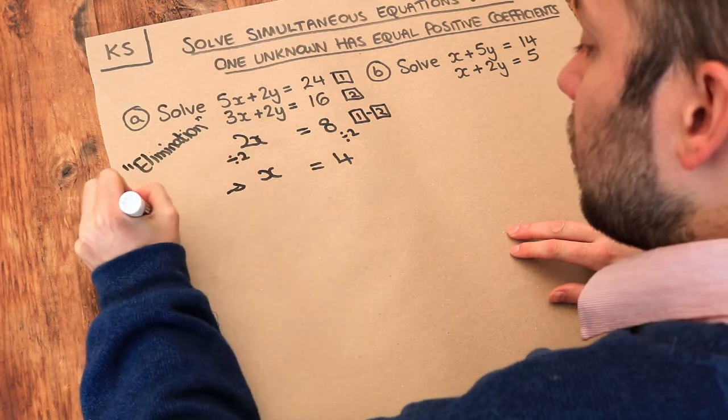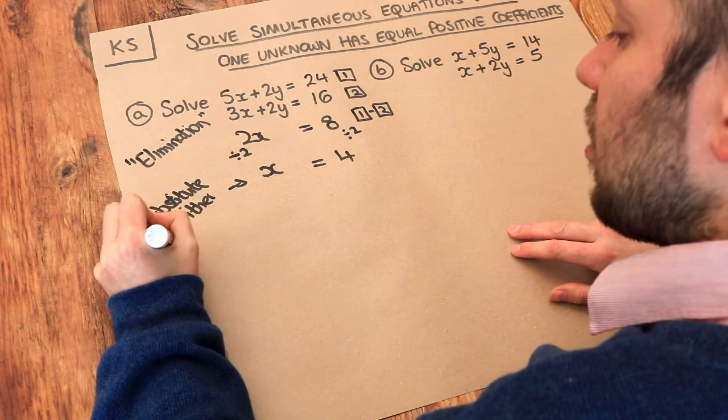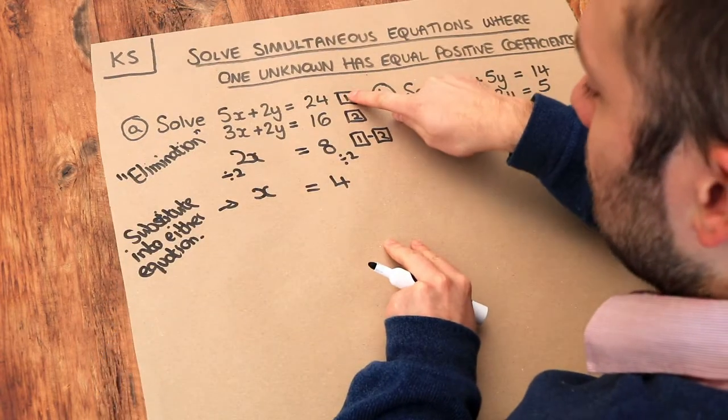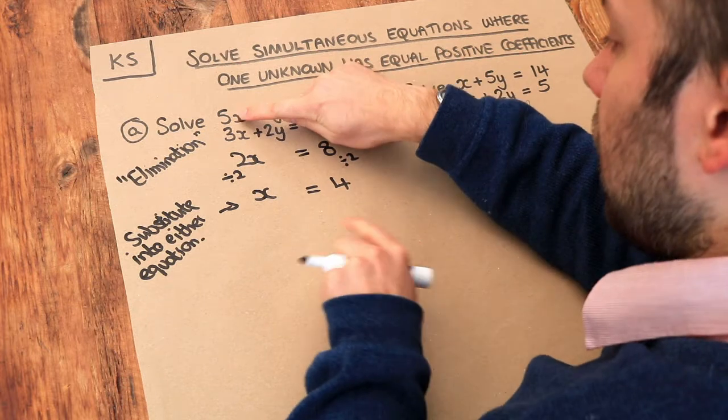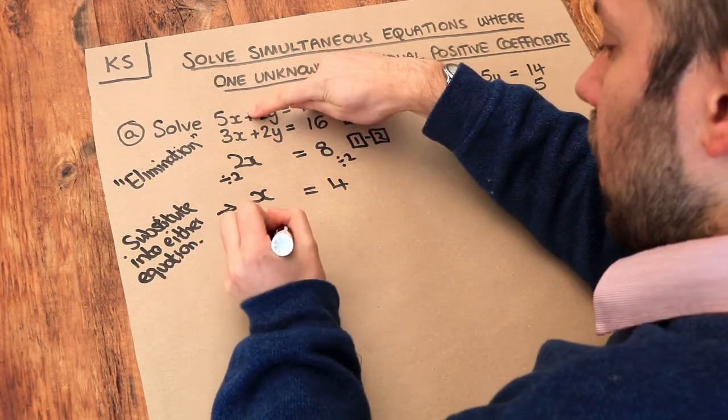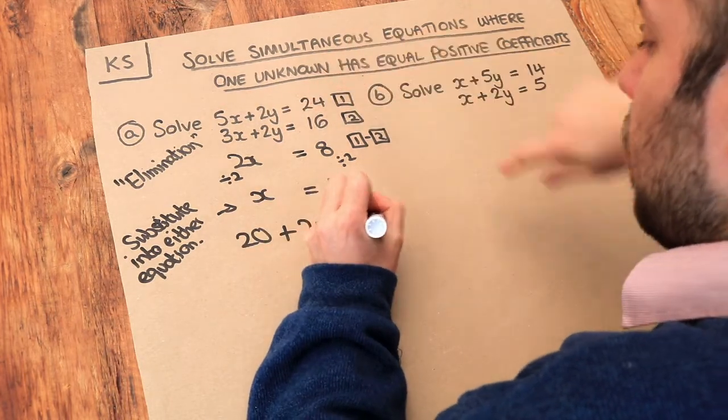So we're going to substitute into either equation. I'm just going to choose equation 1 to substitute this 4 into. So if I do 5 times 4 that's going to be 20. We're adding 2y and that is equal to 24.